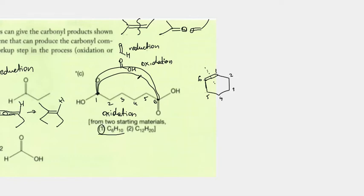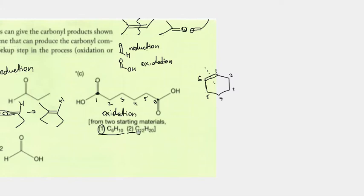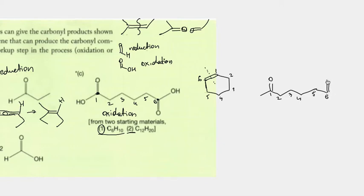Now let's look at number two. This product comes from an alkene that had 12 carbons. We already calculated there are six carbons in this product. So in order to come from something with 12 carbons, we must have had two of these products. I'm going to redraw it and number it one, two, three, four, five, and six, and draw my oxygen. For the sixth one I'll draw it going this way, just to align it well.